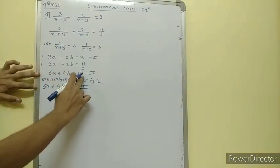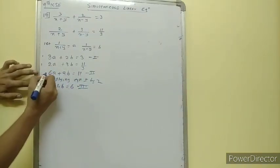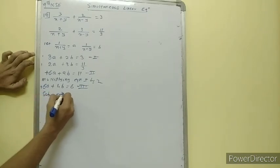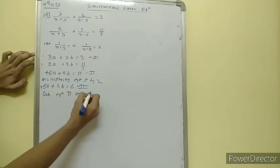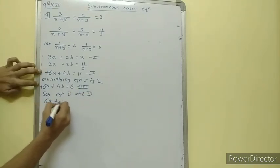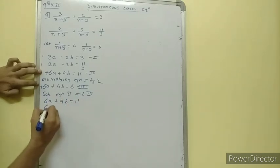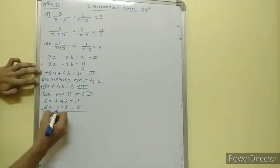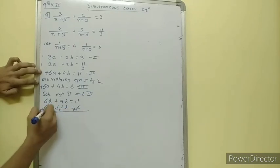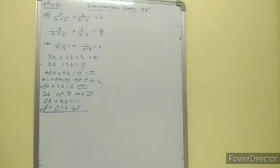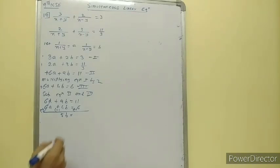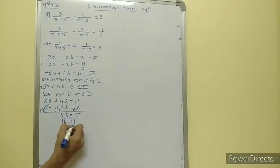So we have 6a plus 4b is equal to 6 — this is the third equation. So: 6a plus 9b is equal to 11, and 6a plus 4b is equal to 6. We have plus signs on both, so when signs are the same we need to subtract. Subtracting equation 2 and 3: 6a minus 6a cancels, 9b minus 4b gives 5b, and 11 minus 6 gives 5. So b is equal to 5 upon 5, that is 1.